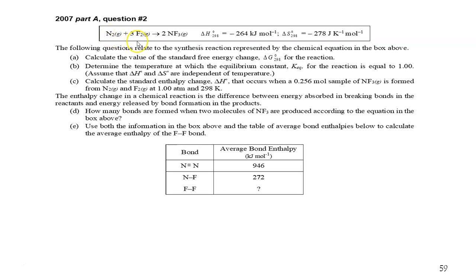They tell you that nitrogen can react with three equivalents of fluorine to make two moles of nitrogen trifluoride. That sounds nasty. It is exothermic and entropically unfavorable since it's negative, meaning you're creating a more ordered system, and it looks like we are. Four things turn into two. They'd like to start by calculating the free energy change, delta G.